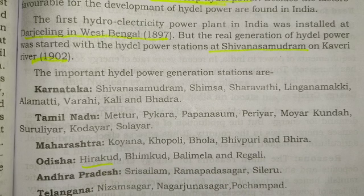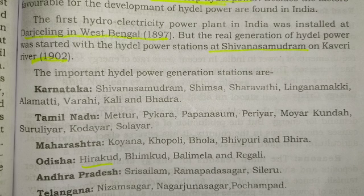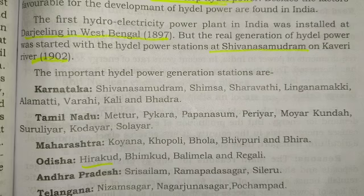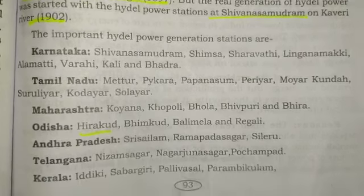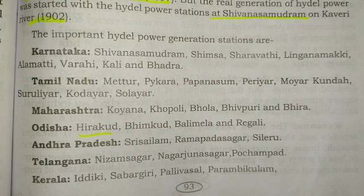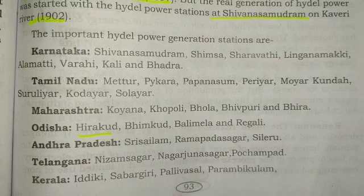In Andhra Pradesh: Srisailam, Ramapada Sagar, and Sileru. In Telangana: Nizamsagar, Nagarjuna Sagar, and Pochampad. In Kerala: Idukki, Sabarigiri, Pallivasal, and Parambikulam.